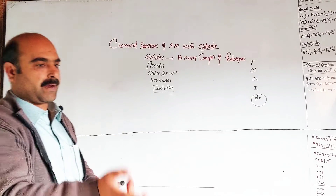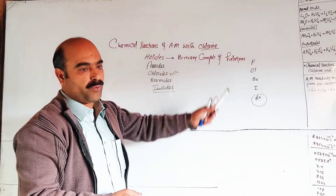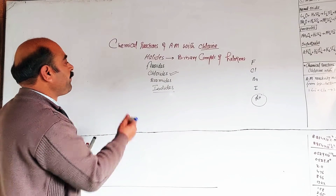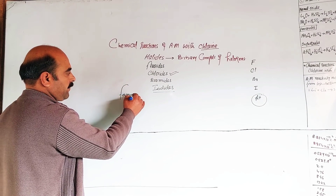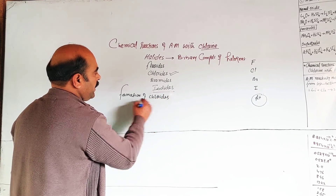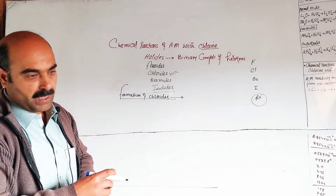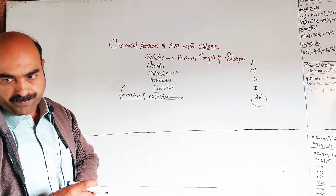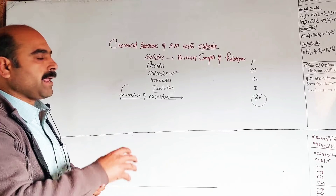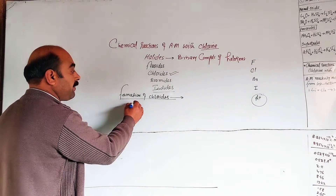Binary compounds of chlorine with alkali metals form chlorides. This is the formation of chlorides. Binary compounds of chlorine are called chlorides. Alkali metals have high reactivity with halogens — they react with chlorine to form binary compounds called chlorides. Reactivity increases from top to bottom among alkali metals.